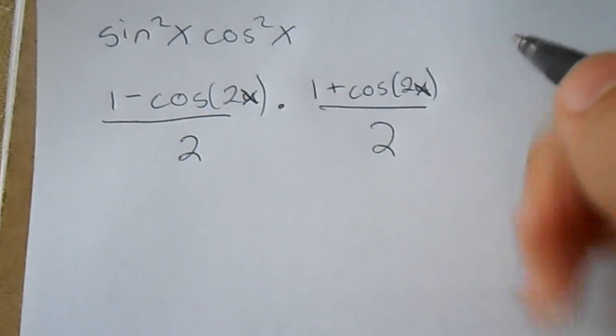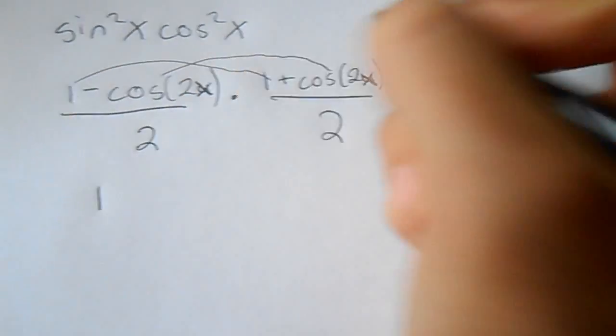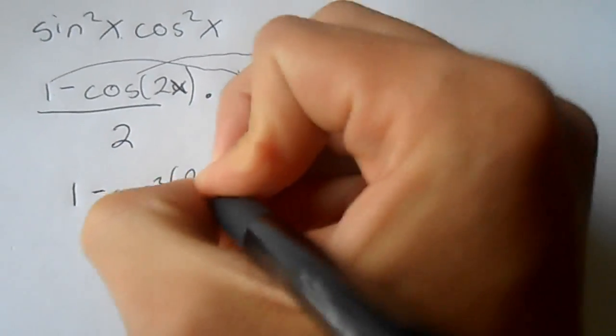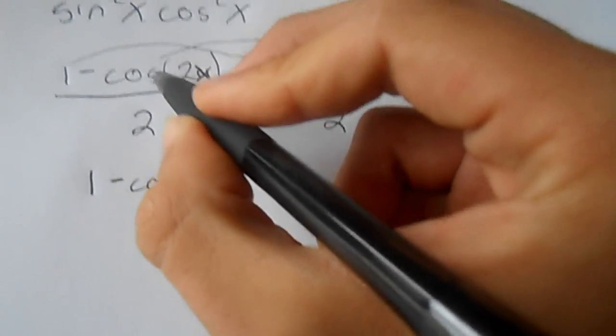After that, we FOIL this out. One times one would be one. Negative cosine times positive cosine would be negative cos²(2x). I misspoke when I said of x, it's cosine of 2x.